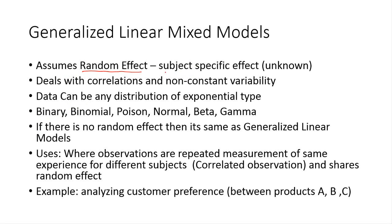Random effects are nothing but the subject-specific effect on the dataset. For example, if there are three products and we are analyzing the customer preference for those three products, there could be some effect which is totally dependent on different products — totally random. There is a difference from the population average; that effect is totally different than the population average. That is known as the random effect, and the population average is known as the fixed effect.